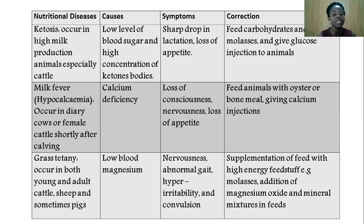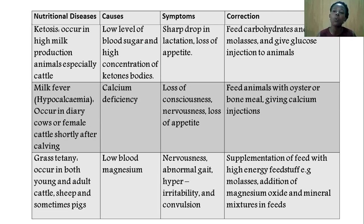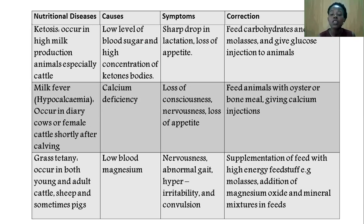Next is grass tetany, which occurs in both young and adult cattle and sheep. It is caused by low blood magnesium levels. Symptoms include nervousness, abnormal gait — meaning the animal walks abnormally — hyperirritability, where the animal is very hypersensitive to things around it, and convulsions. To correct grass tetany, supplementation of feed with high-energy feed such as molasses is recommended, along with addition of magnesium oxide or mineral mixtures.